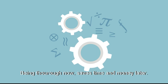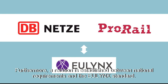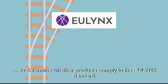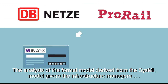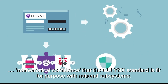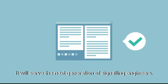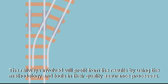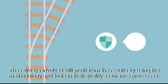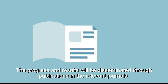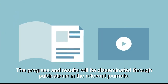Being thorough now saves time and money later. Furthermore, a relation is established between national requirements and the U-Lynx standard. And finally, it can be tested using the formal model to determine whether products comply to the U-Lynx standard. The analysis of the formal model derived from the SysML model gives infrastructure managers mathematical confidence that the U-Lynx standard is fit for purpose with national subsystems. The use of formal methods is an important step for the future of signalling and will serve the next generation of signalling engineers. The railways involved will profit from the results by using the methodology and tools in their quality assurance processes. The progress and results will be disseminated through publications in the relevant journals.